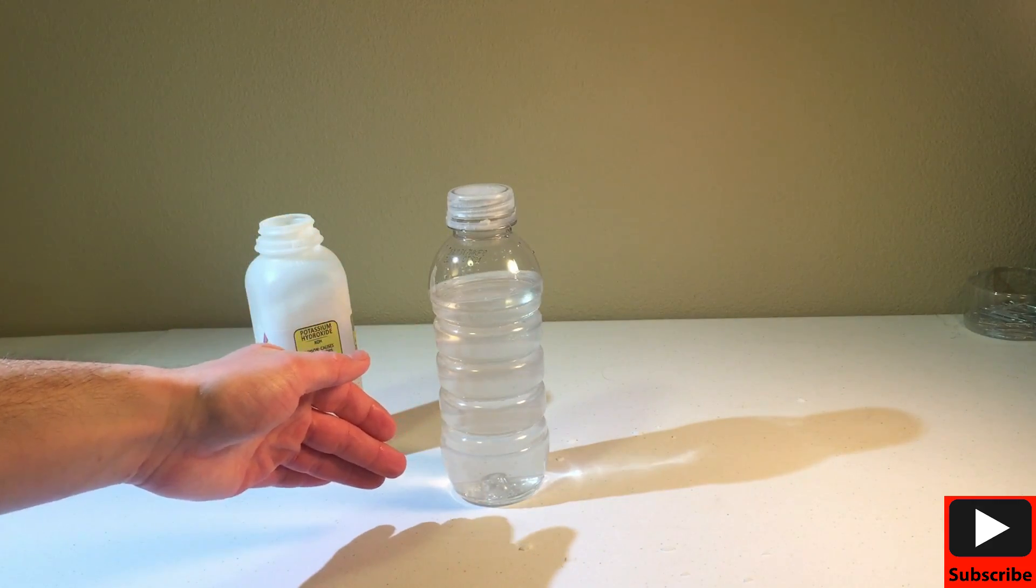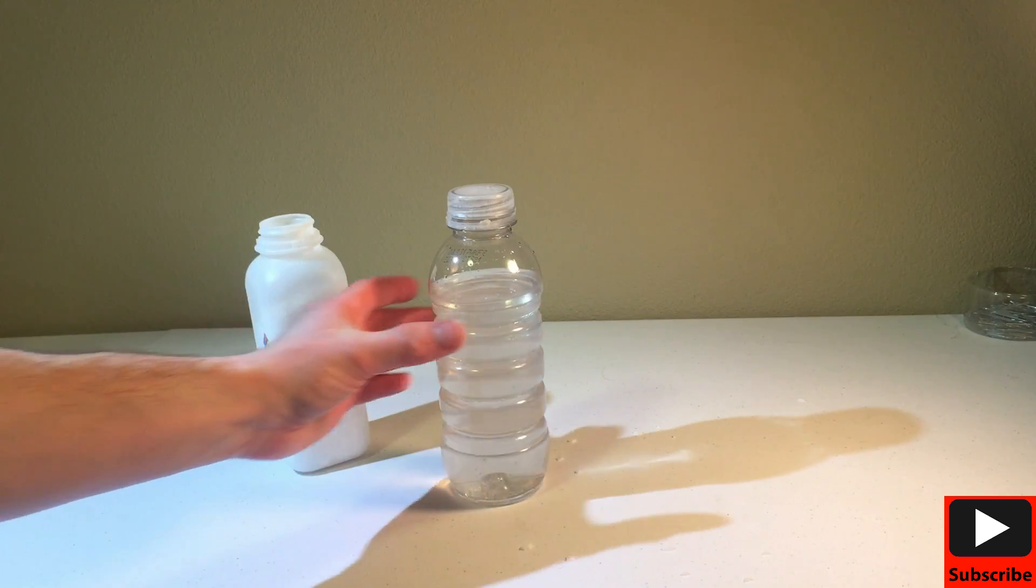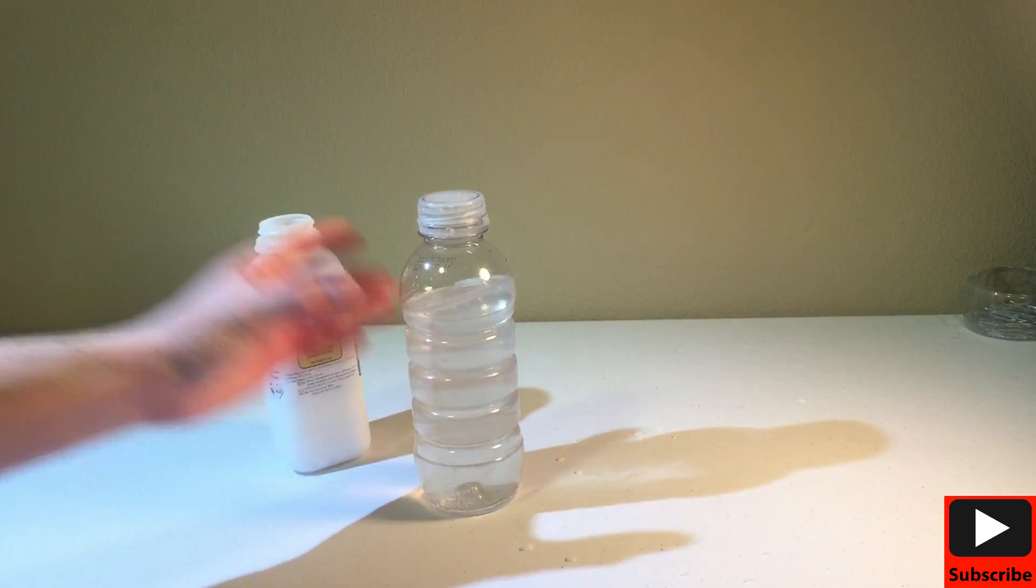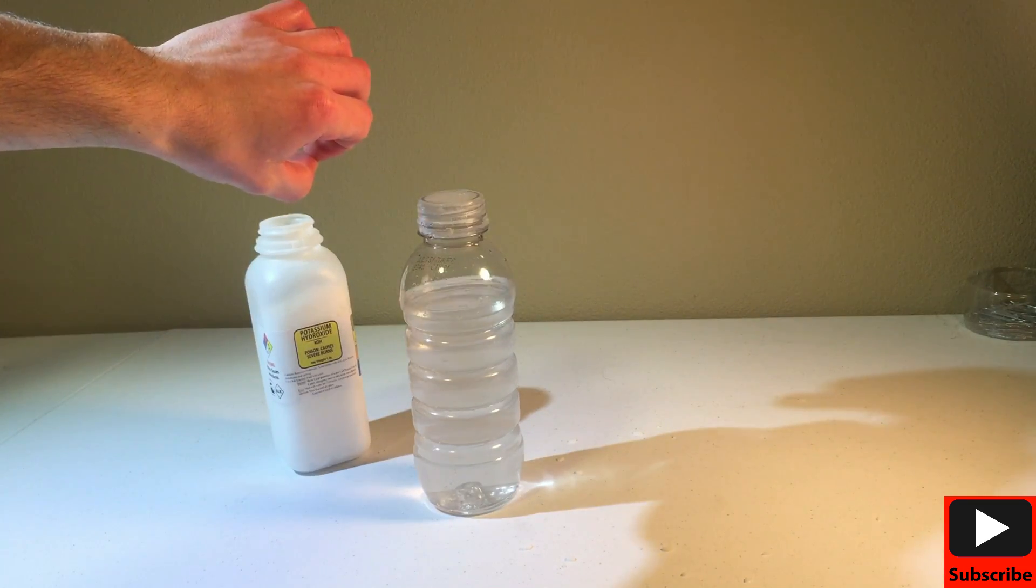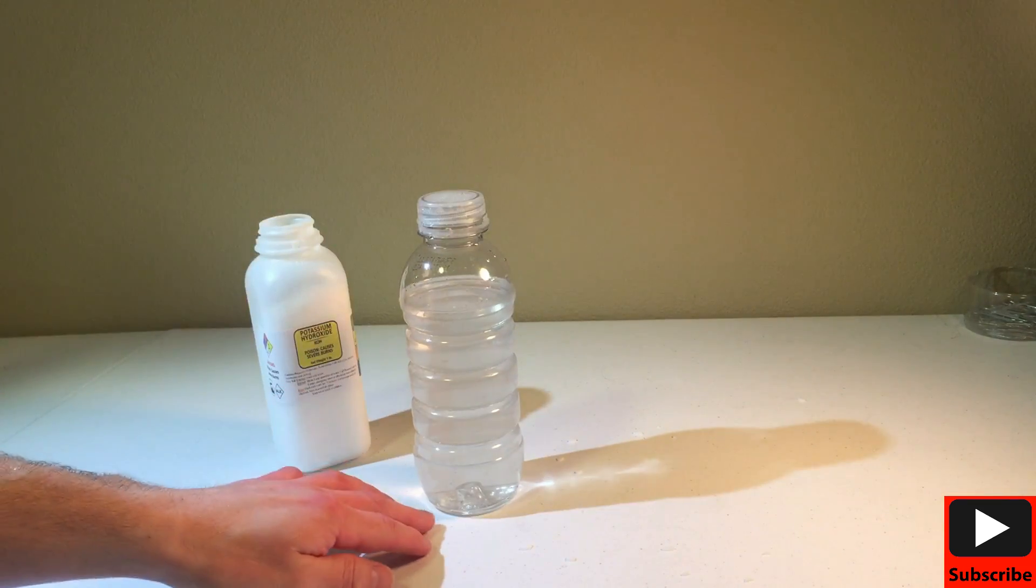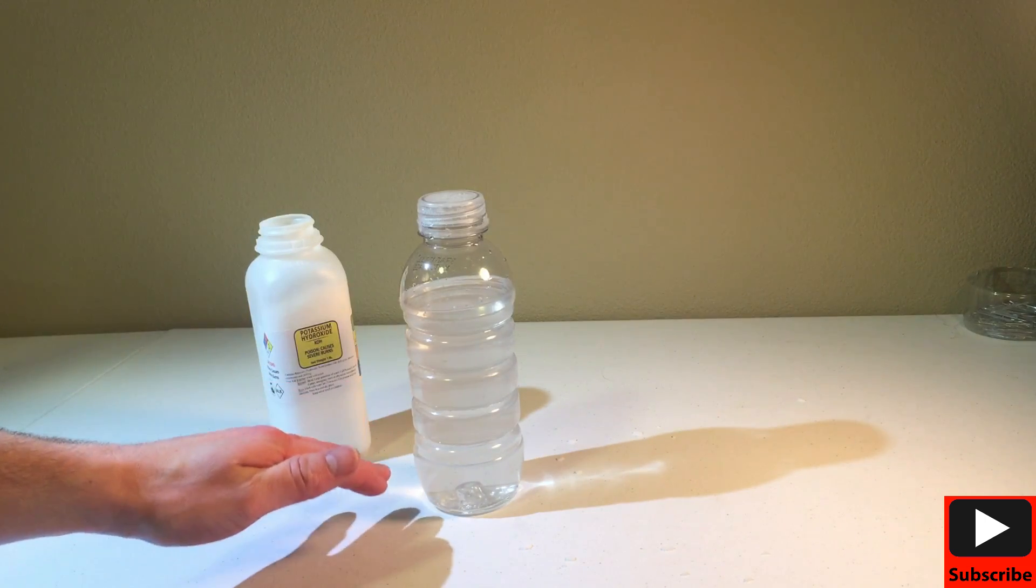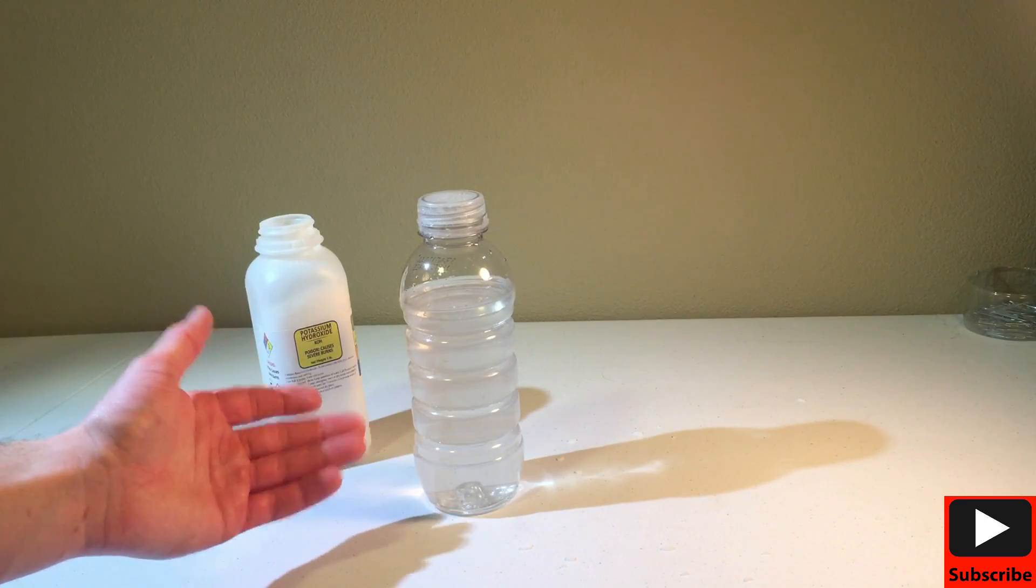And heat up the water to the point that it starts melting the bottom, because it was doing that earlier. I was pouring the potassium hydroxide in and it just started melting the bottom because it was sitting there too long and it was just heating it up very quick.